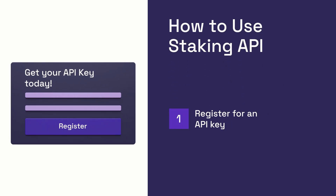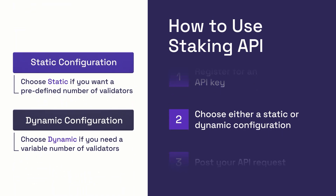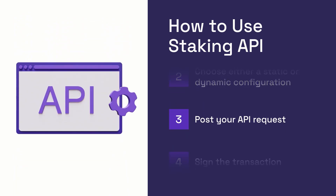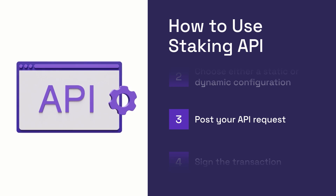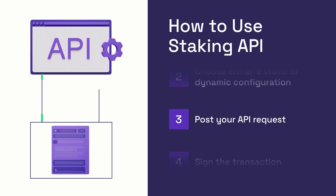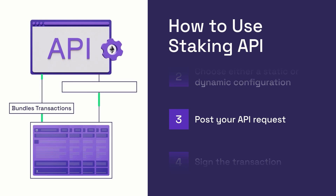Step 1: Register for an API key. Step 2: Choose either a static or dynamic configuration. Step 3: Post your API request. The Staking API then gets to work. If you're staking ETH, Blockdaemon's smart contracts bundle transactions and a single contract address is returned for up to 100 validators.